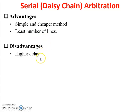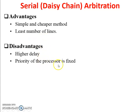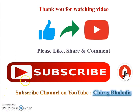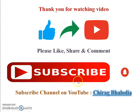Advantages of serial arbitration: it is a simple and cheaper method with the least number of lines. However, there is a higher delay, the priority of each processor is fixed — processor one has first priority, then processor two, then processor three — and it is not reliable.